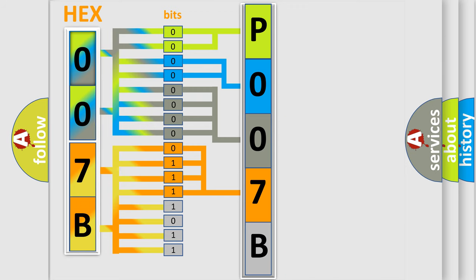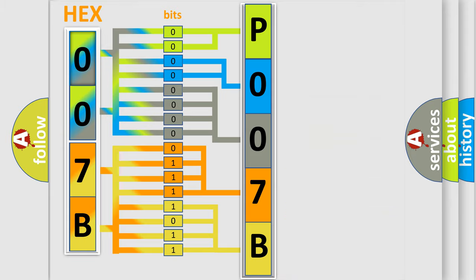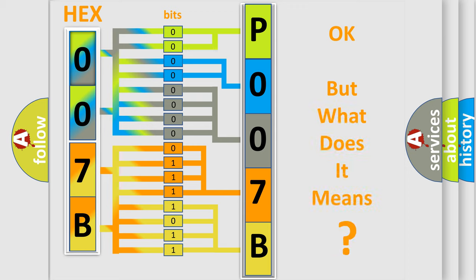A single byte conceals 256 possible combinations. We now know in what way the diagnostic tool translates the received information into a more comprehensible format. The number itself does not make sense to us if we cannot assign information about what it actually expresses.